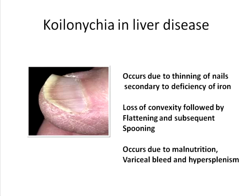However, koilonychia is not a specific sign of liver disease. It occurs mainly due to malnutrition and can also happen with gastrointestinal blood loss, such as in peptic ulcer or duodenal ulcer. In liver disease, three possible reasons include malnutrition due to severity of illness, bleeding from esophageal or gastric varices, and hypersplenism consuming RBCs, leading to anemia.